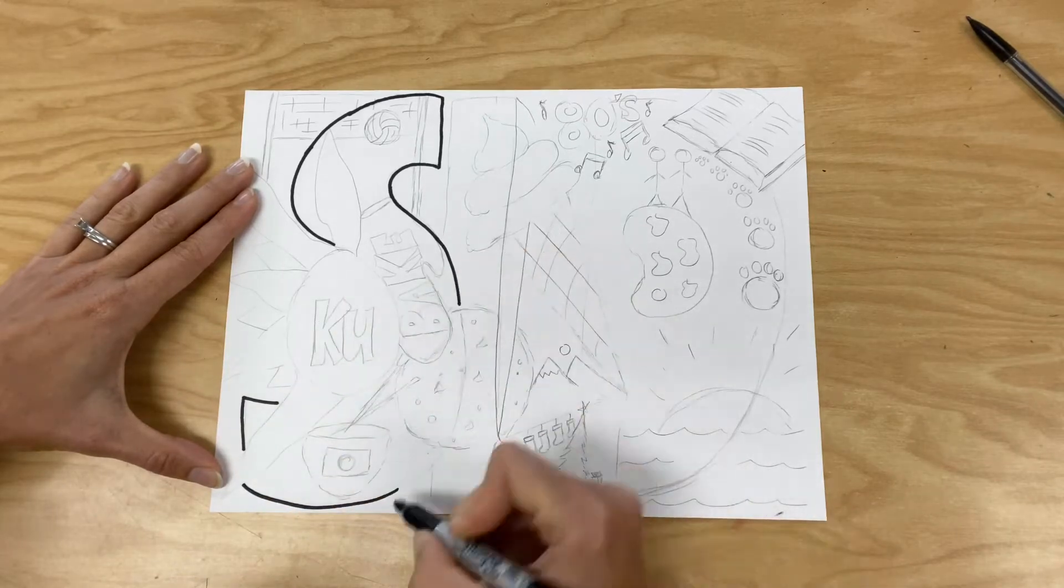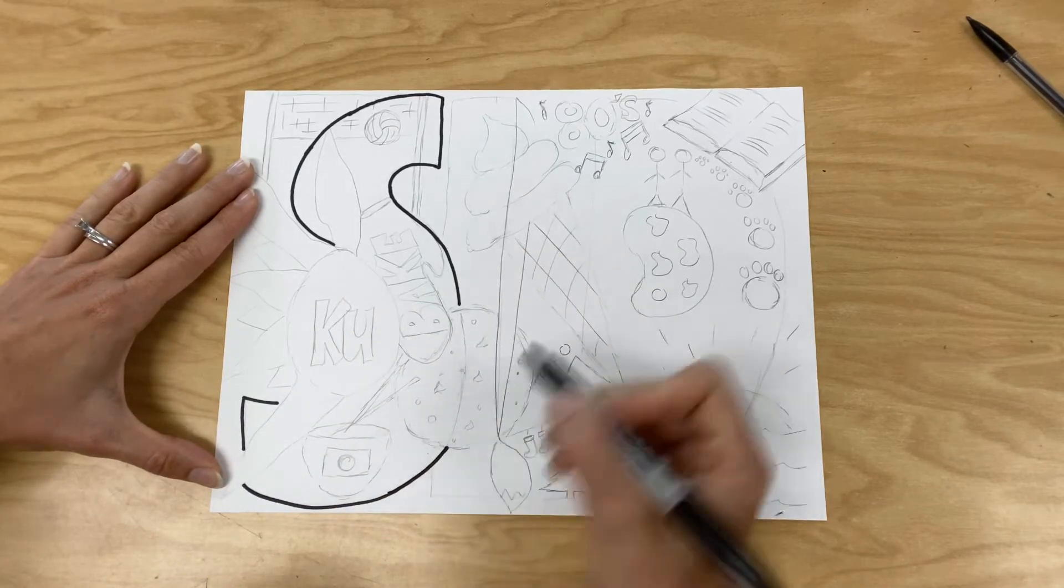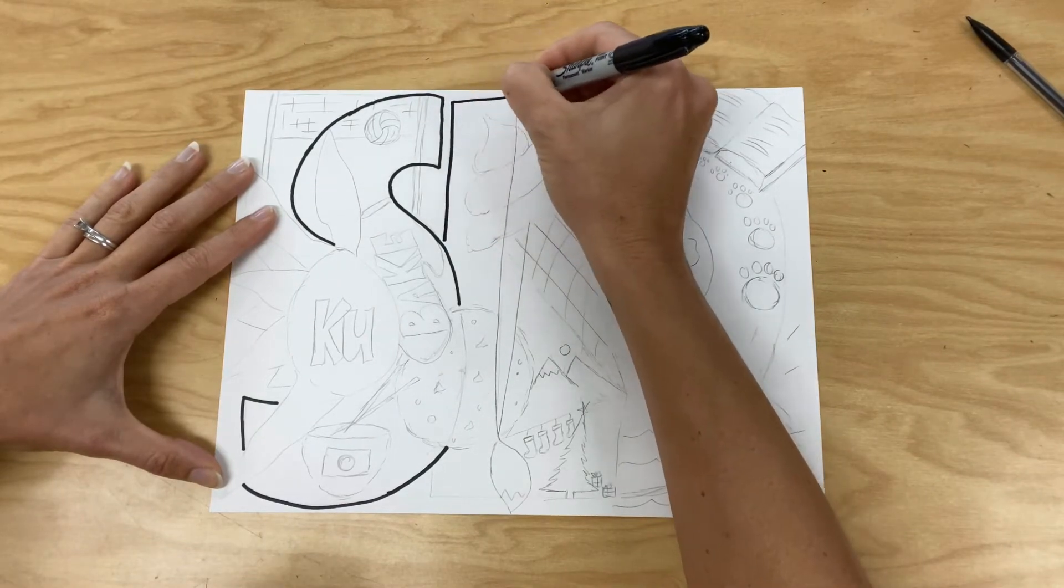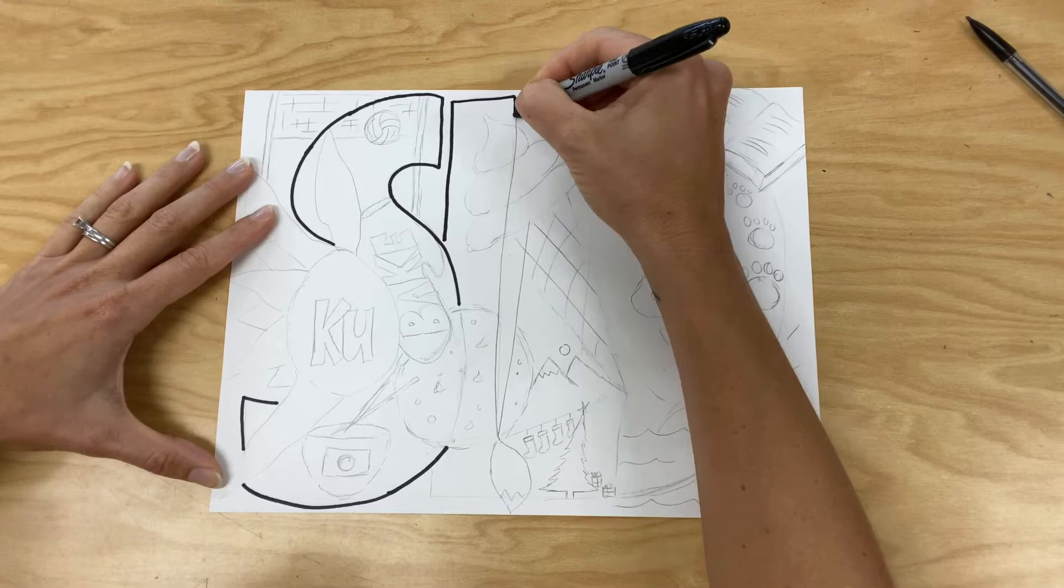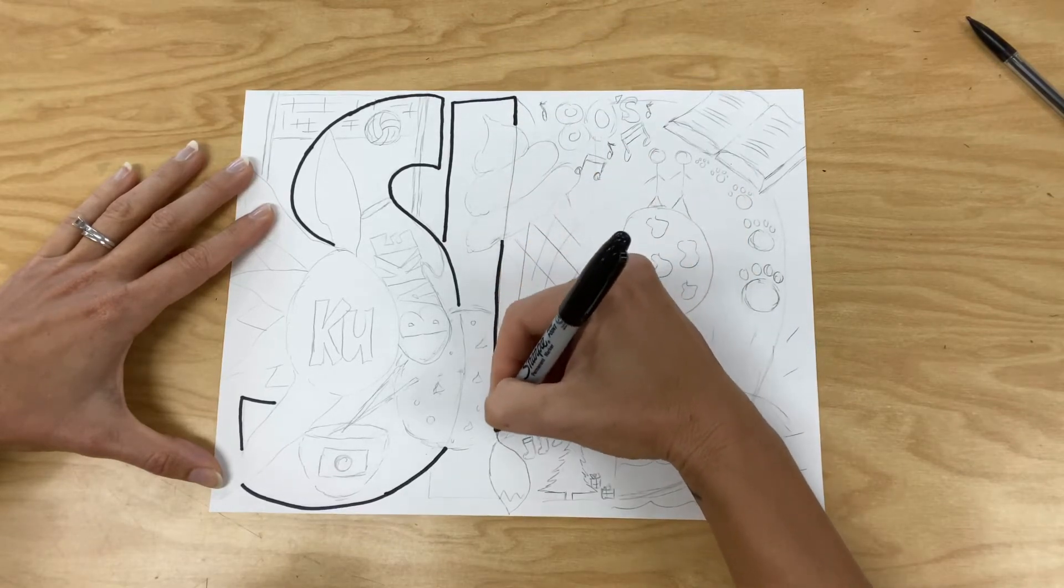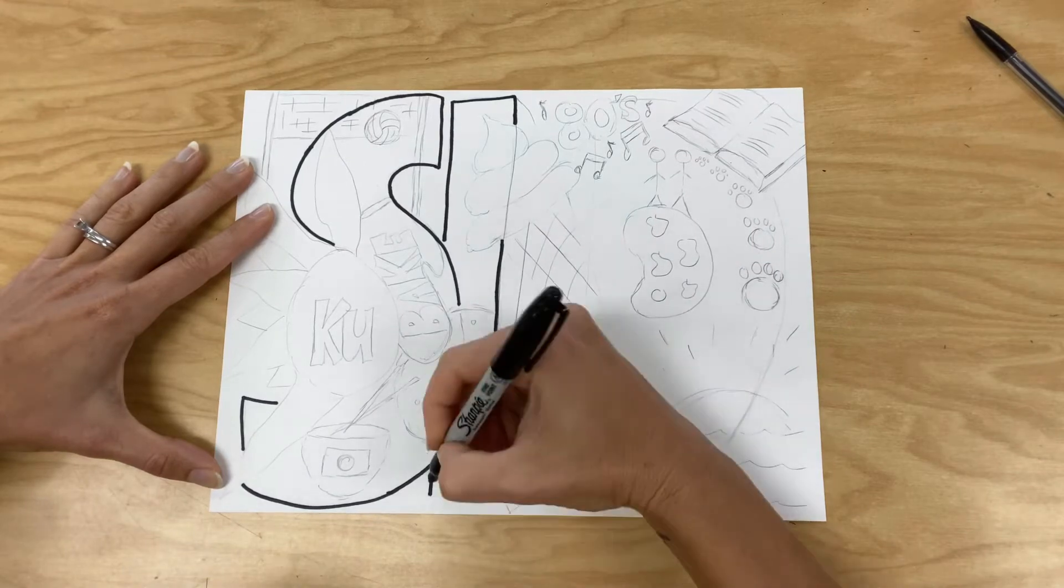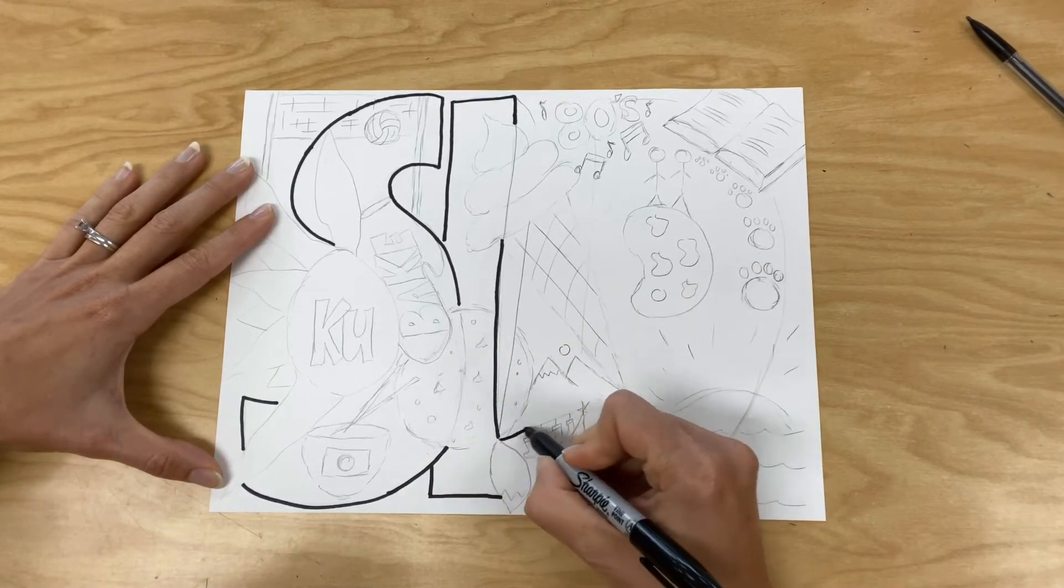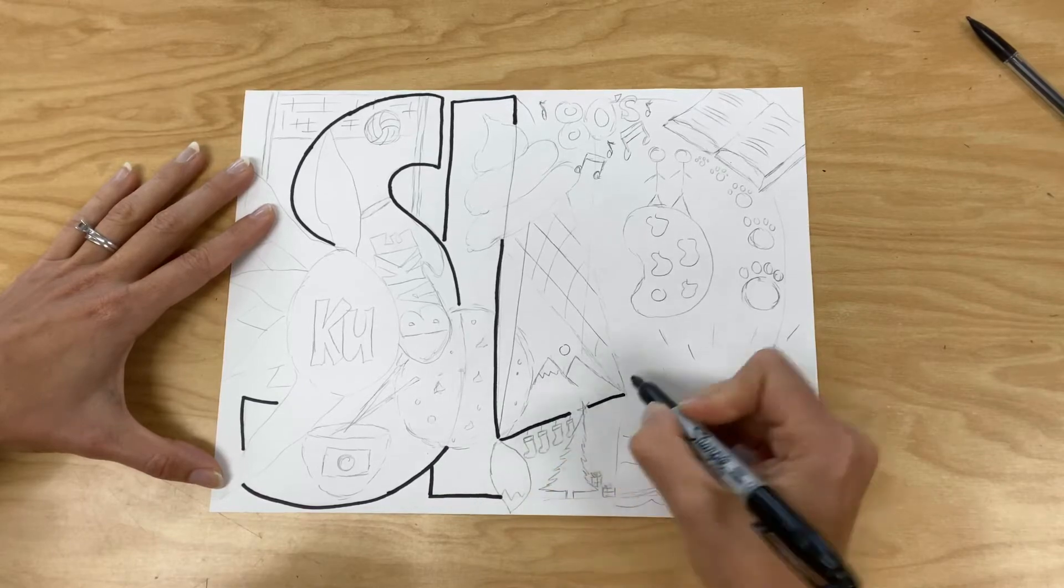Now be careful where some imagery may overlap your lettering. You're not going to want to draw your black Sharpie line necessarily through the image. You can see here where I've stopped and started through my S depending on where imagery overlapped my S. So you're outlining with black Sharpie your initials.